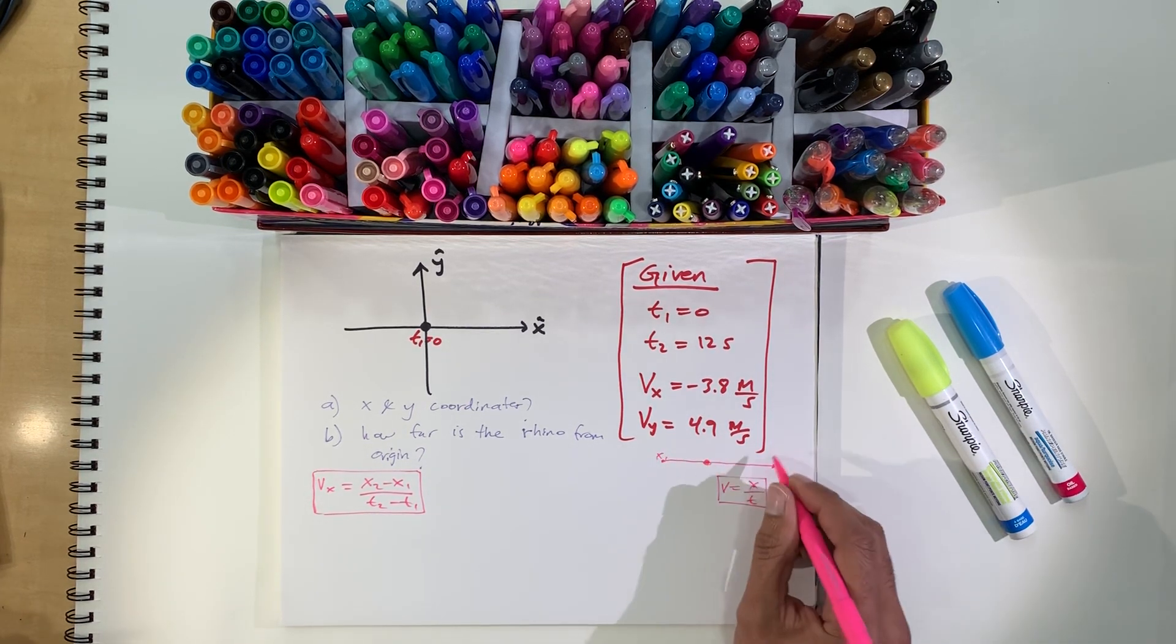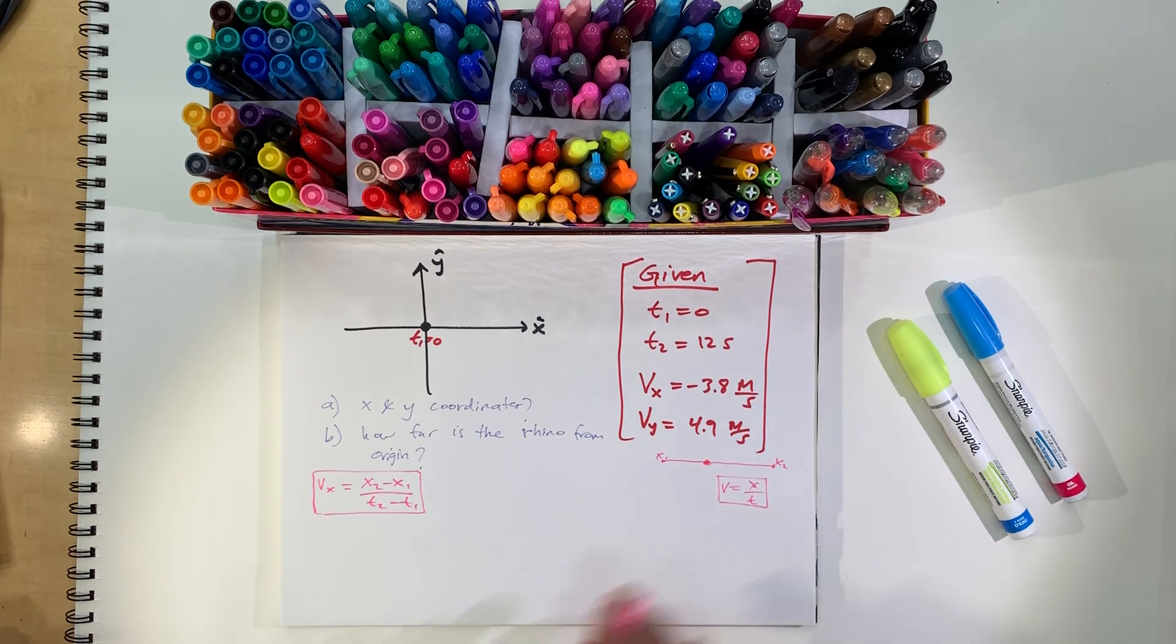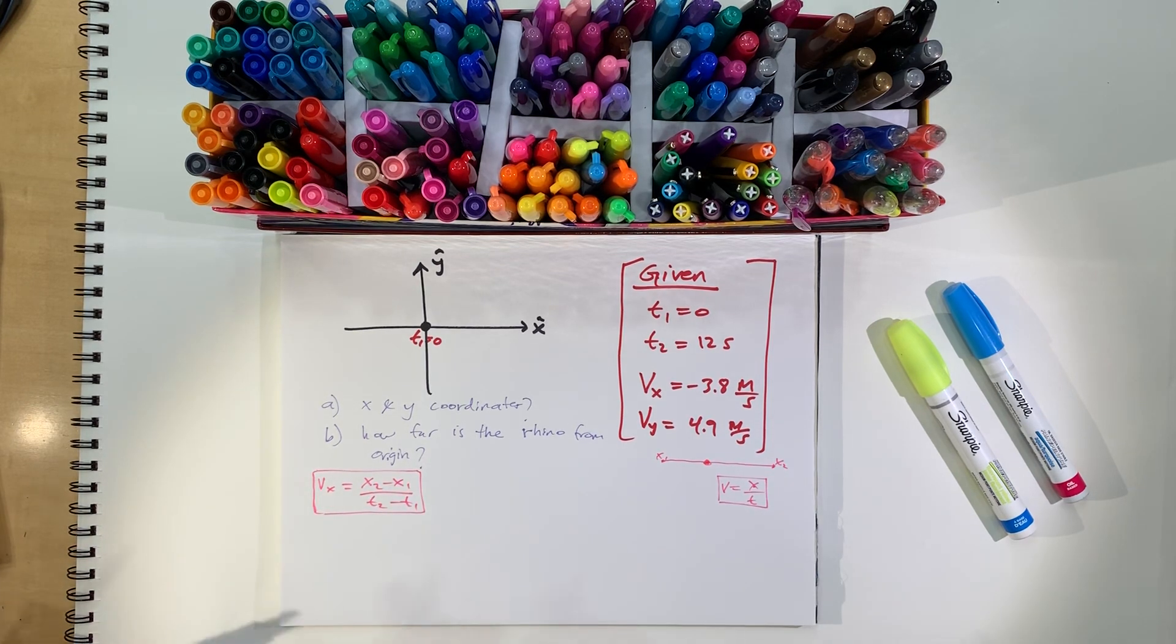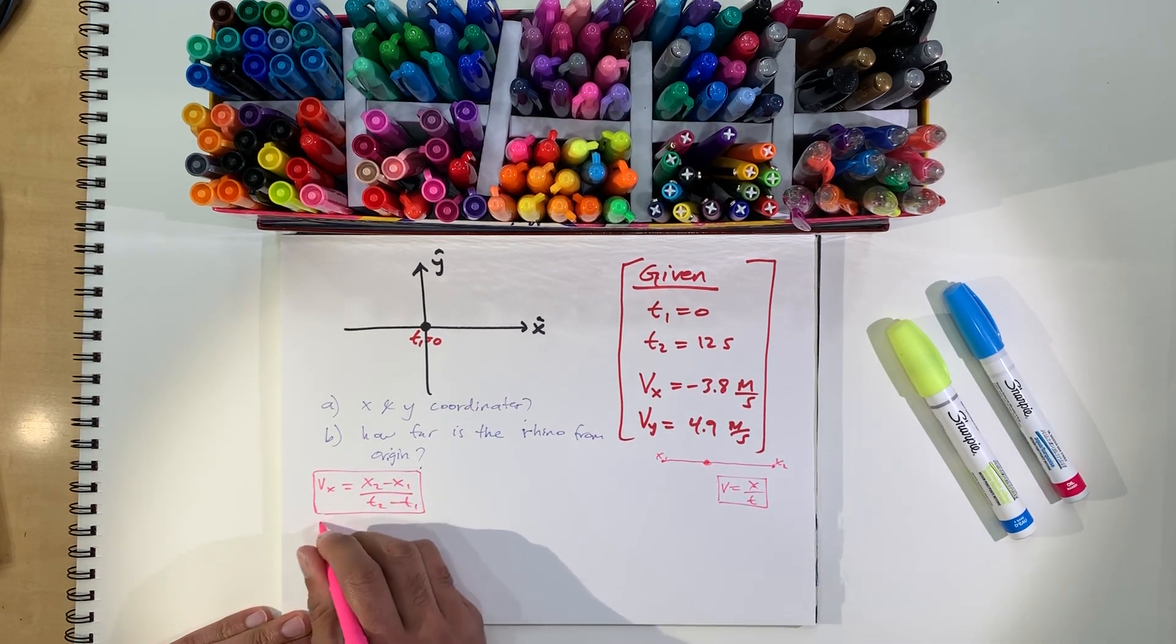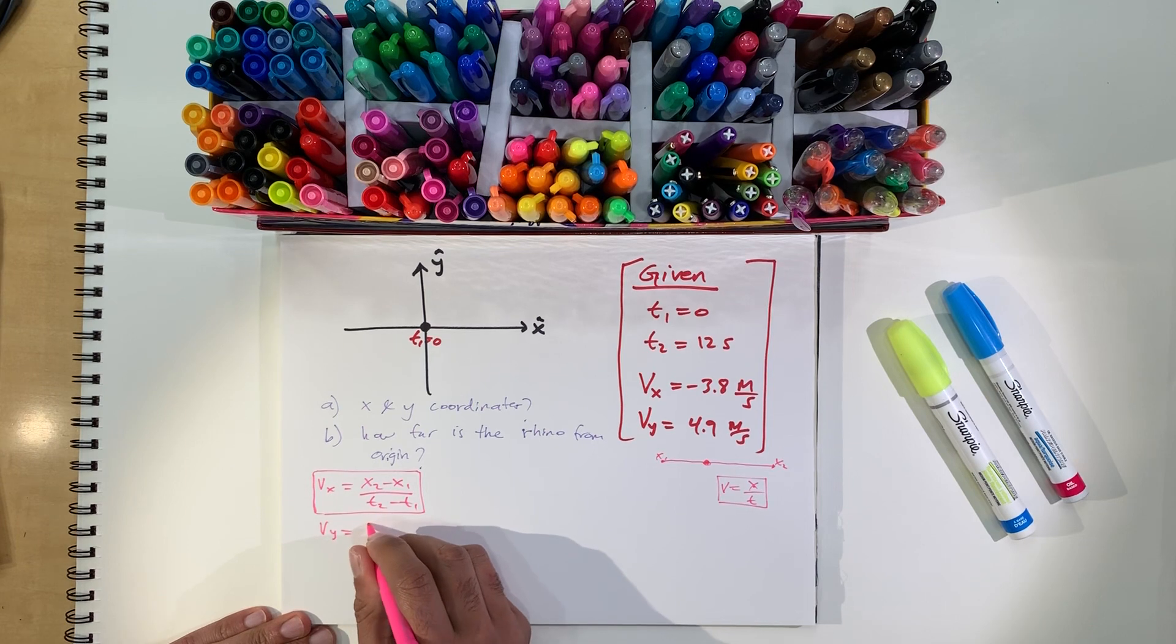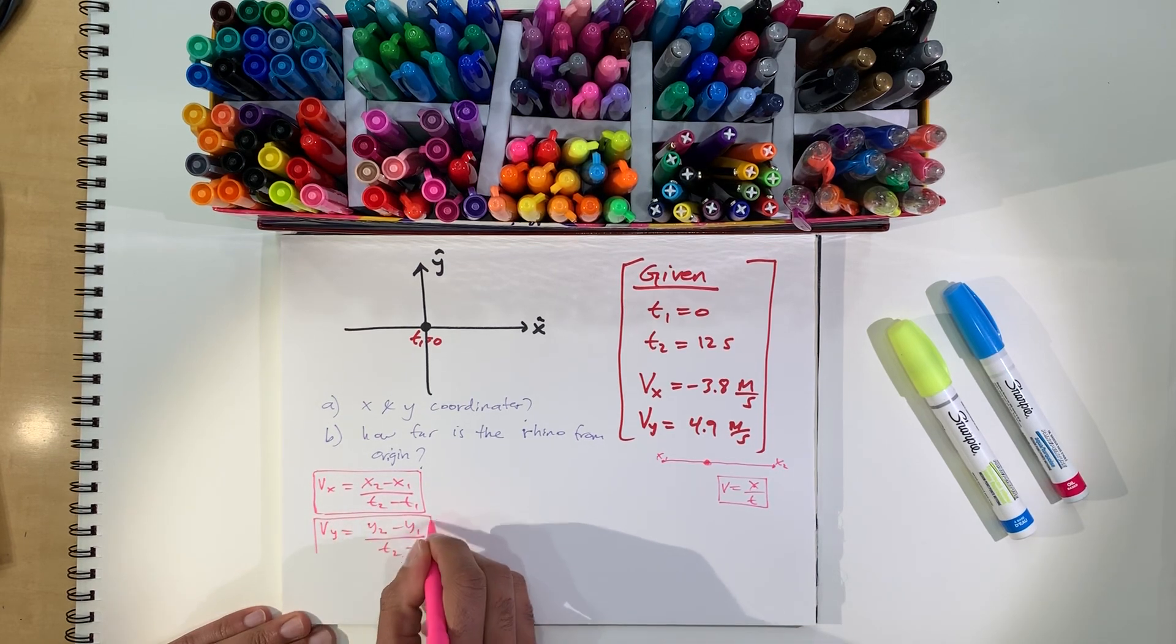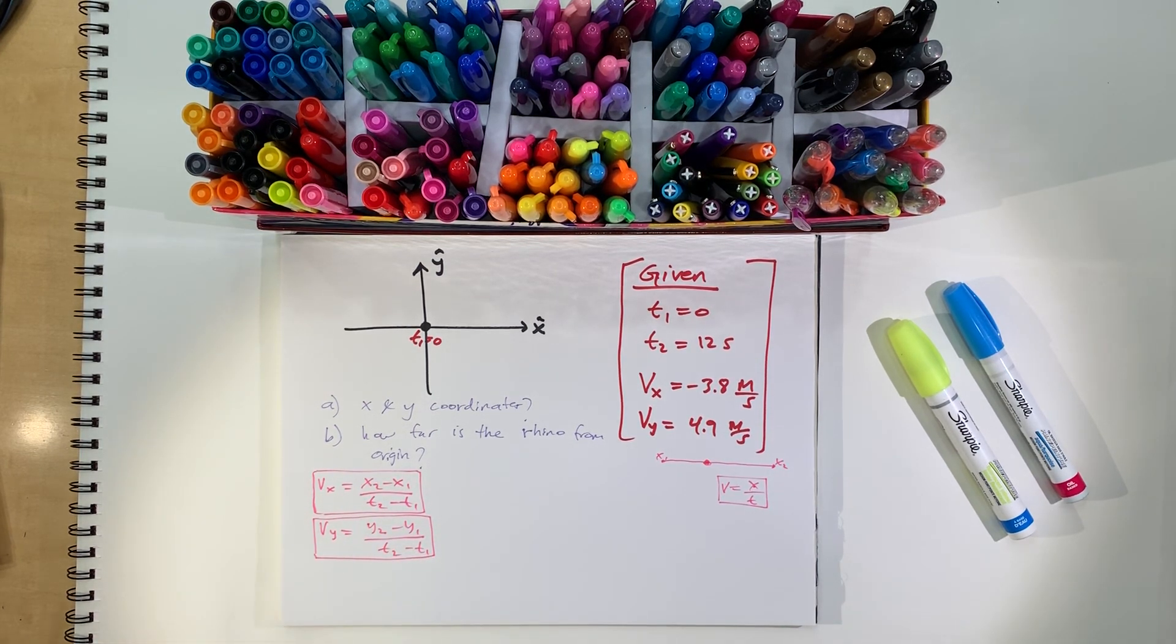So, just some notes on that. All right, so let's write x1, x2. So, this is just an example, so you can ignore that now. All right, so here, we have this formula, and then for the vy, it's the same thing. We got y2 minus y1 over t2 minus t1. All right, so let's use that.